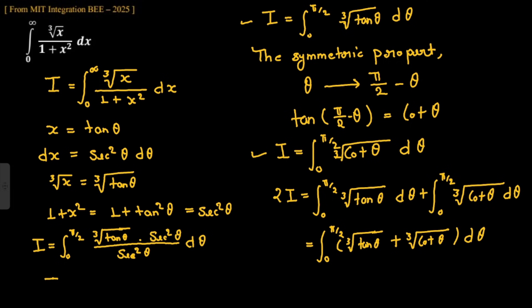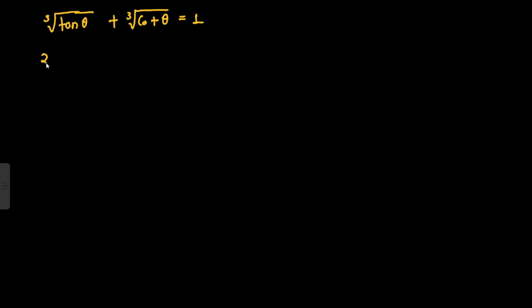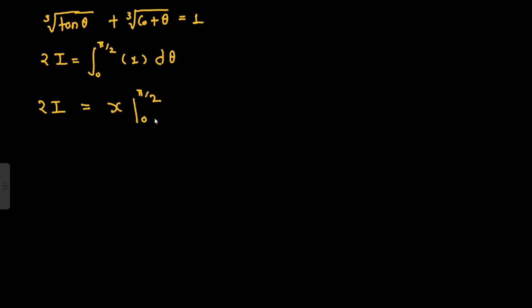We use the identity: cube root(tan θ) + cube root(cot θ) = 1. So 2I = ∫₀^(π/2) 1 dθ = [θ]₀^(π/2) = π/2 − 0 = π/2.